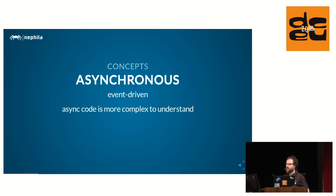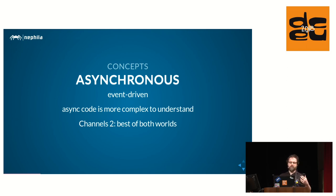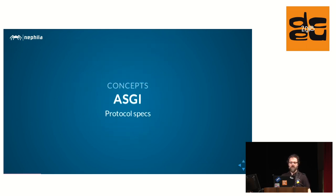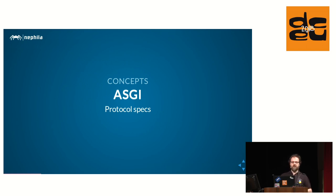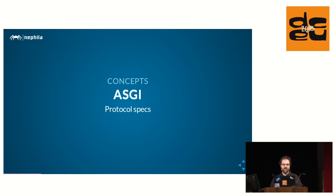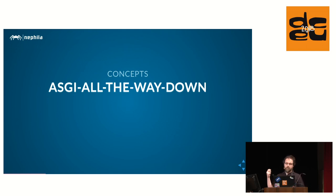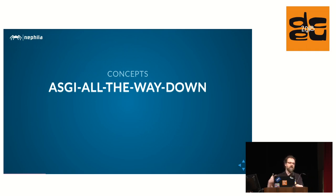A problem with asynchronous code is that it is generally more complex to understand and write because of its non-linear nature. Channels 1 decided to hide most of its complexity, while channels 2 embraces it and exposes the asynchronous core. You can still write synchronous code, but you can switch to asynchronous if you need. One important base concept of channels is the ASGI protocol, which was developed together with channels but is broader than channels - it provides an implementation-independent specification of an asynchronous interface, similar to WSGI in the synchronous world.